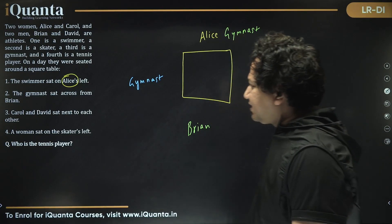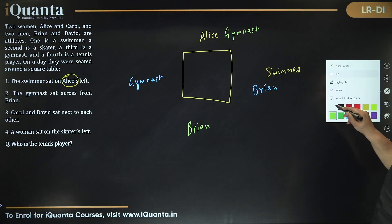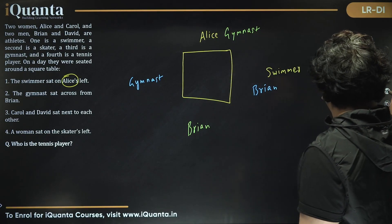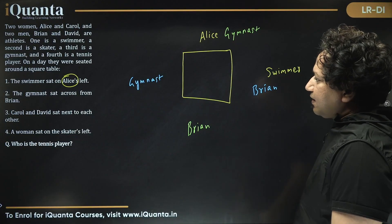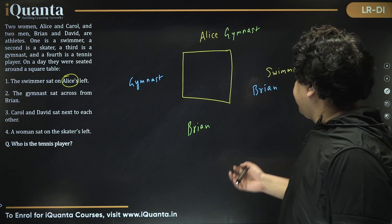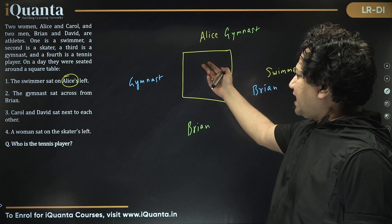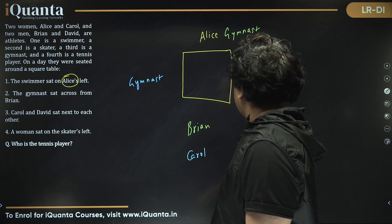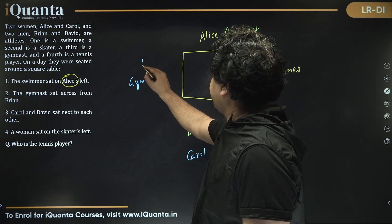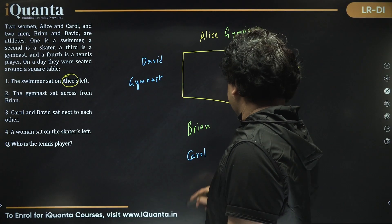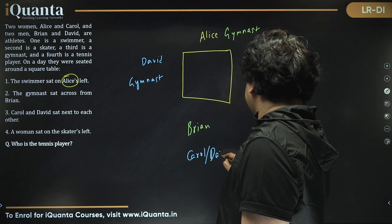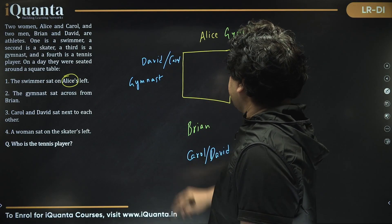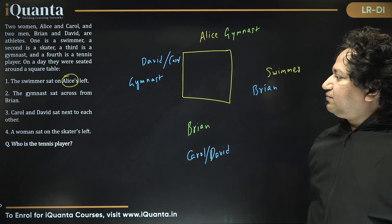First statement, Carol and David sit next to each other. So I'm taking blue color now. If this is Brian, this is Alice, and Carol and David must be either Carol sitting over here or David sitting over here, or David sitting over here and Carol sitting over here. So this is for the centralization. Carol, David, David, Carol.